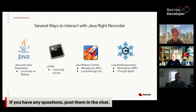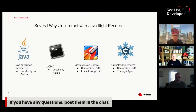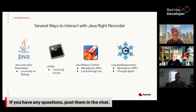There are several ways to interact with Java Flight Recorder. Locally at startup, you can pass command line parameters when you start your Java app. jcmd is a local application that interacts via the process ID on your system. Java Mission Control interacts through JMX or through your local PID if you're running it on your local box. And then there's Cryostat.